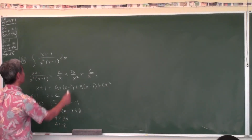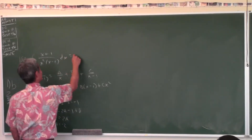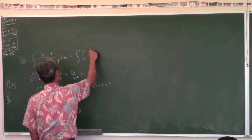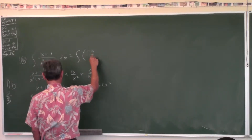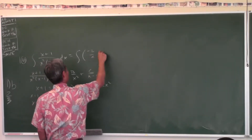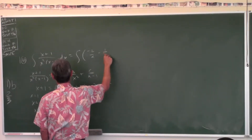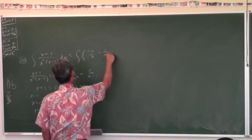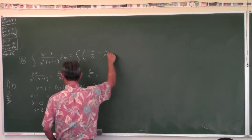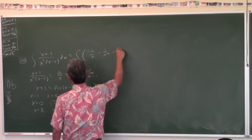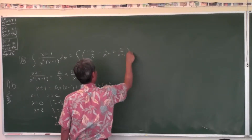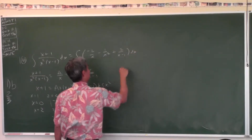So this integral is the same as: negative 2 over X, minus 1 over X squared, plus 2 over X minus 1. Can you guys take it from there, or do I have to do the last step?